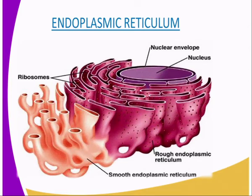The first cell organelle that we are going to discuss is the endoplasmic reticulum. As you can see from our diagram, the endoplasmic reticulum — we have the ribosomes, we have the nuclear envelope, the nucleus, rough endoplasmic reticulum, and the smooth endoplasmic reticulum.